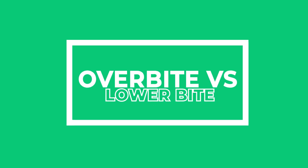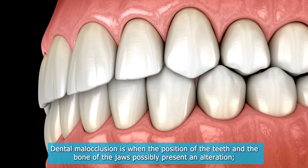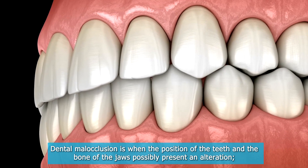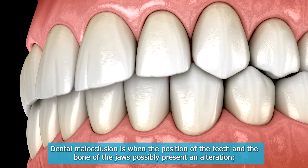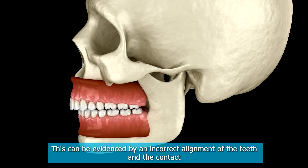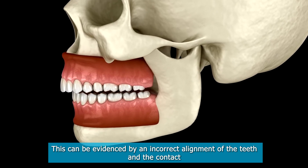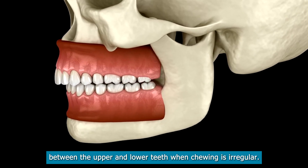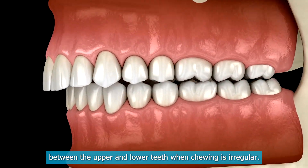Overbite versus underbite. Dental malocclusion is when the position of the teeth and the bone of the jaws possibly present an alteration. This can be evidenced by an incorrect alignment of the teeth and the contact between the upper and lower teeth when chewing is irregular.